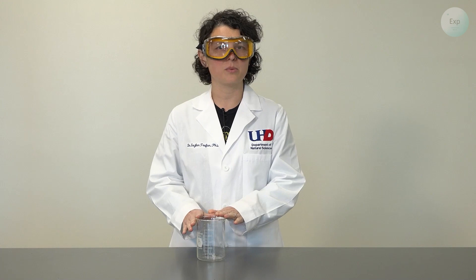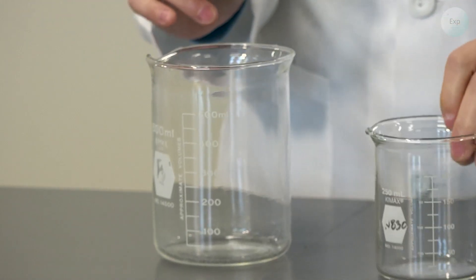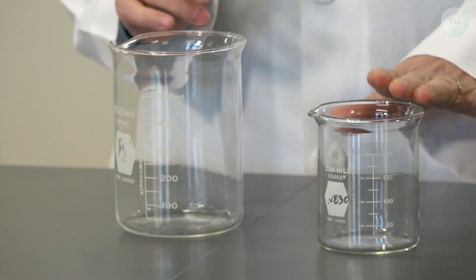For this part of the experiment, we're going to need a couple items. First, a large beaker, and I would recommend going with a 600 milliliter beaker. We'll also need a slightly smaller one. So here I have a 250 milliliter beaker.